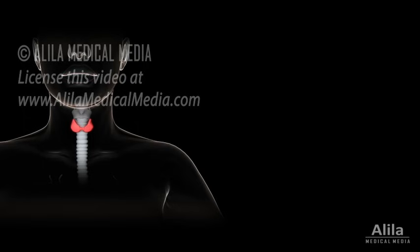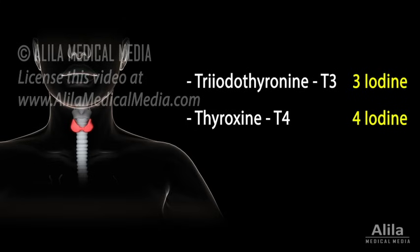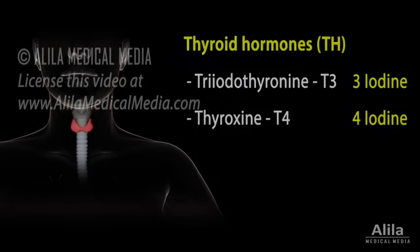The two major hormones of the thyroid are triiodothyronine, T3, and thyroxine, T4. The numbers 3 and 4 indicate the number of iodine atoms present in a molecule of each hormone. T3 and T4 are collectively referred to as thyroid hormones.